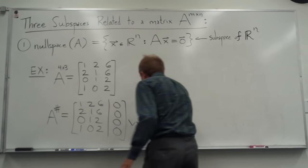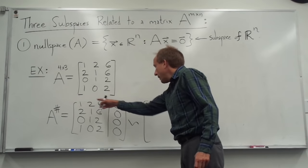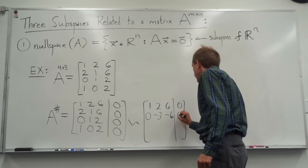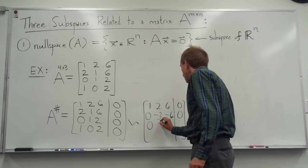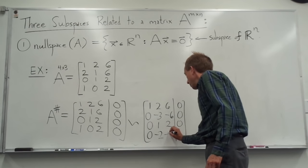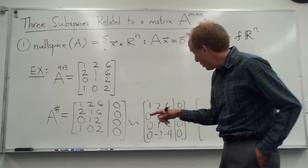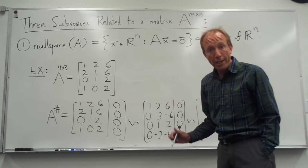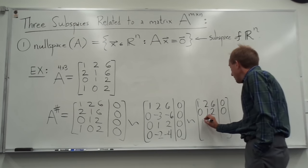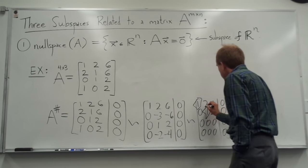We take that matrix and we row reduce it using our EROs. The first row stays the same. We take negative 2 times the first row and add it to the second row — we get 0, negative 3, negative 6. Then take the negative of the first row and add it to the fourth row. What you notice is that the second, third, and fourth rows are all just multiples of one another, so we can zero them out — leaving 0, 1, 2. You get a couple of pivots.